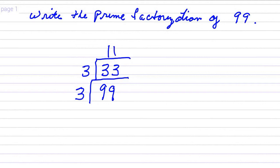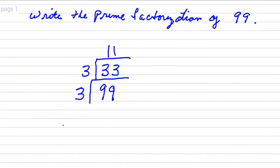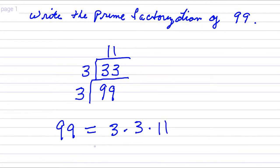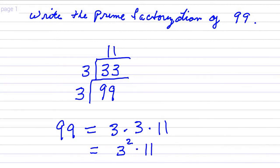And 11 is a prime number, so you can stop right there. The prime factorization of 99 is 3 times 3 times 11. Or if you choose, you can write 3 squared — because there are two factors of 3 — times 11. Either way.